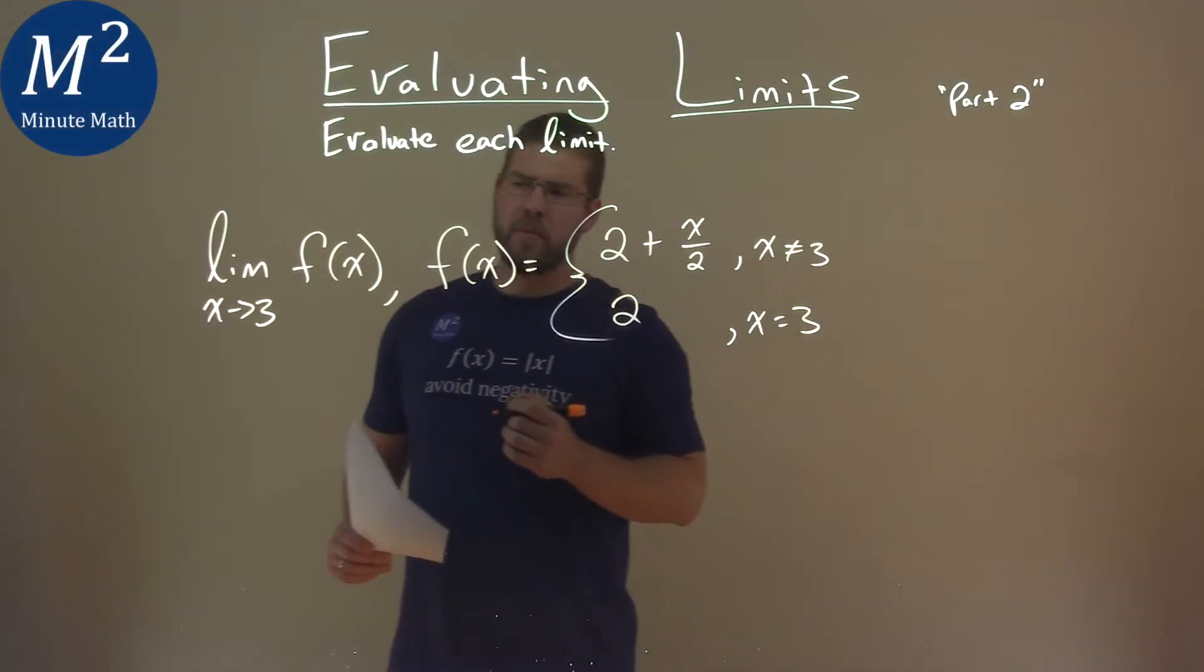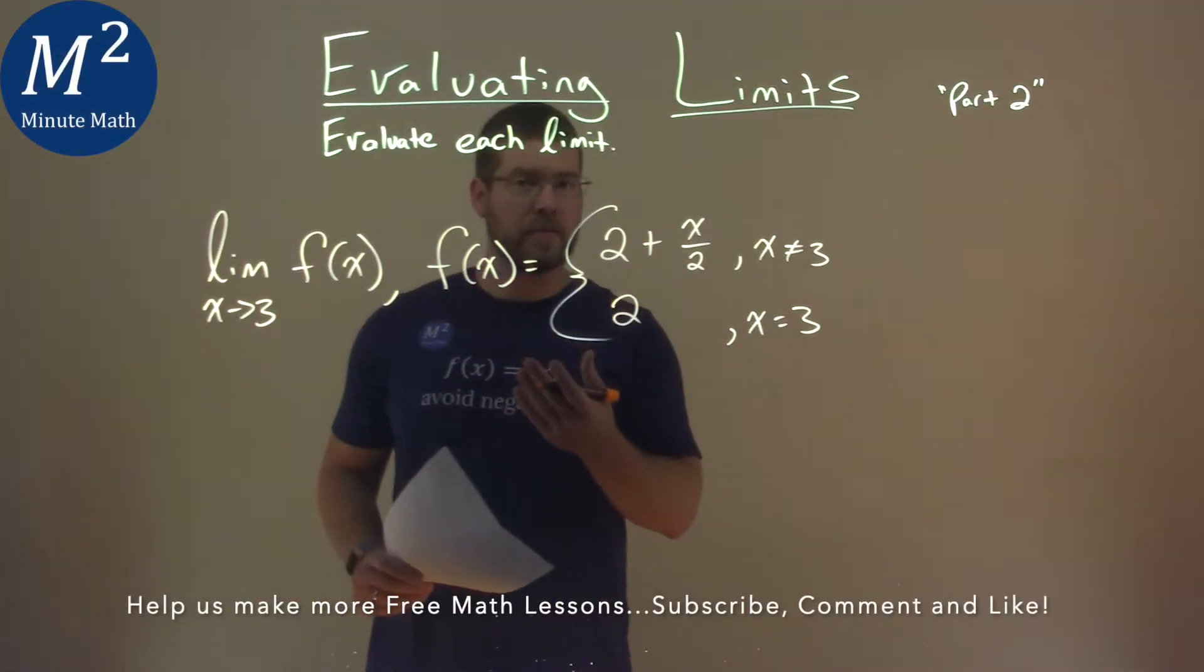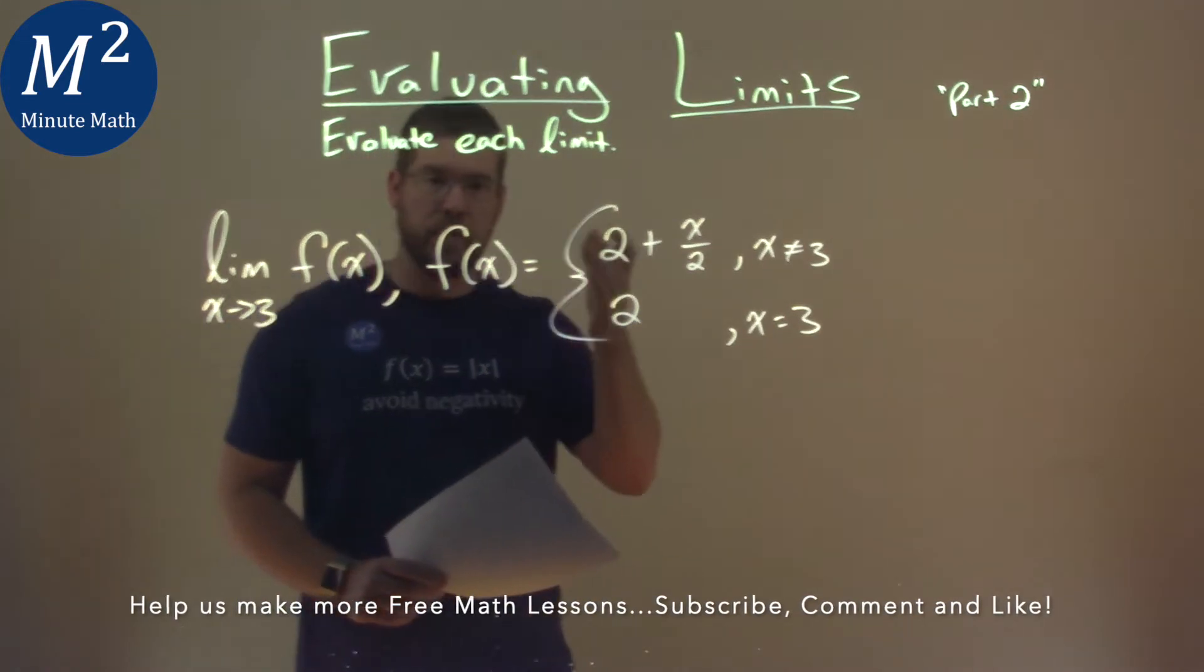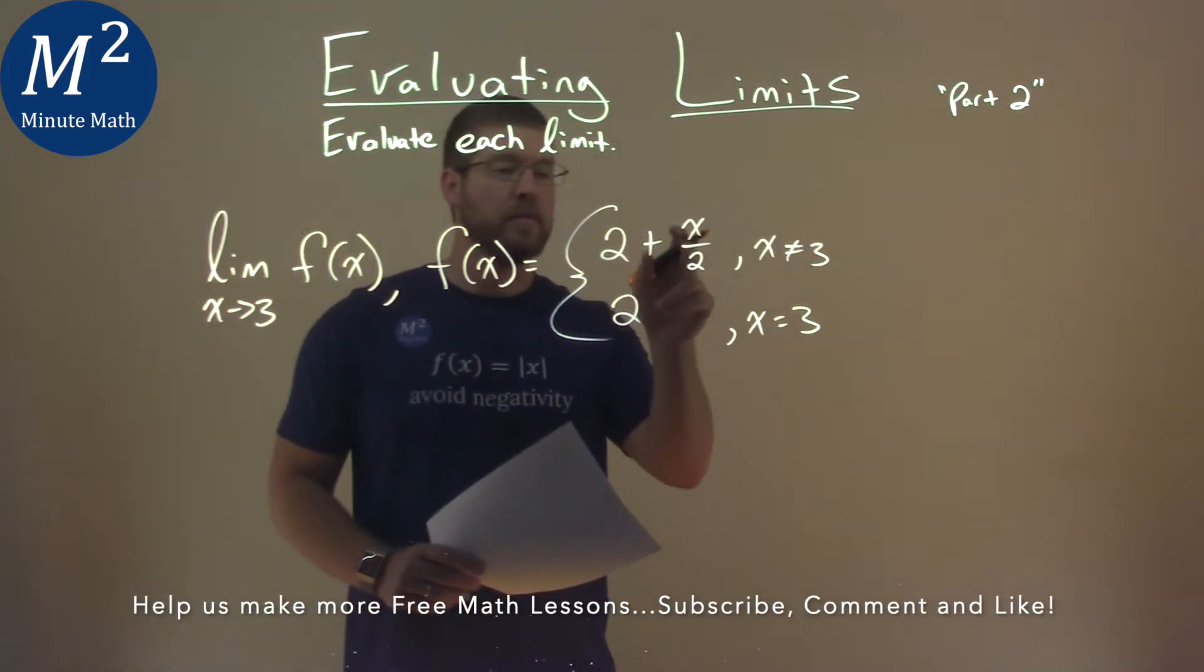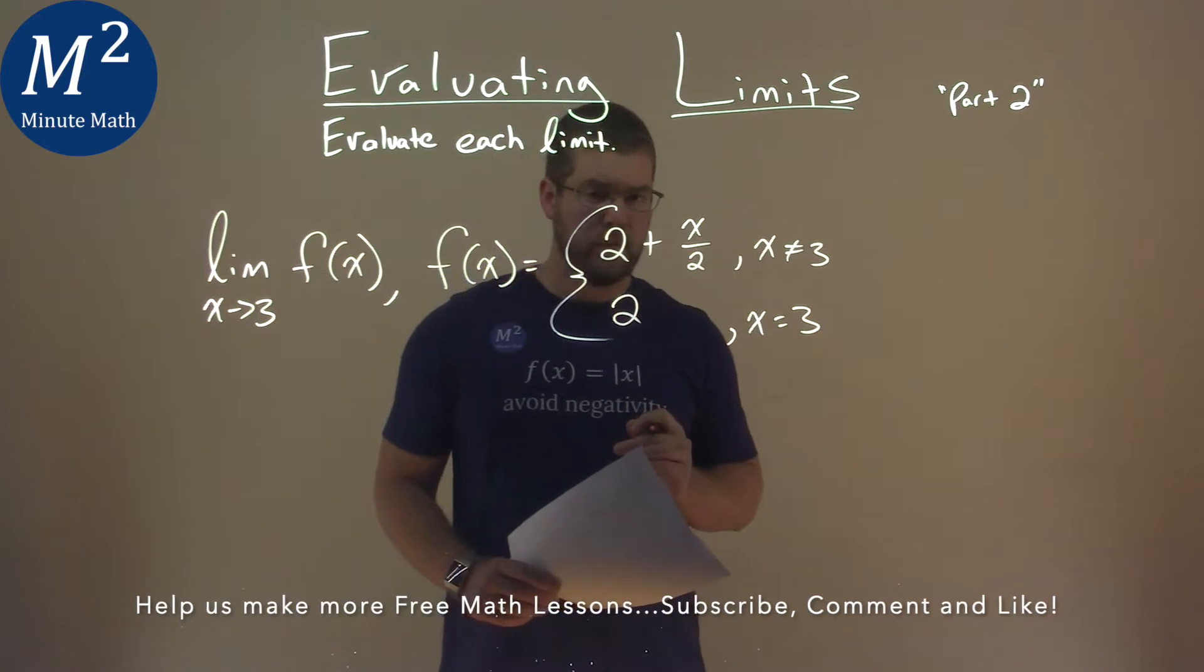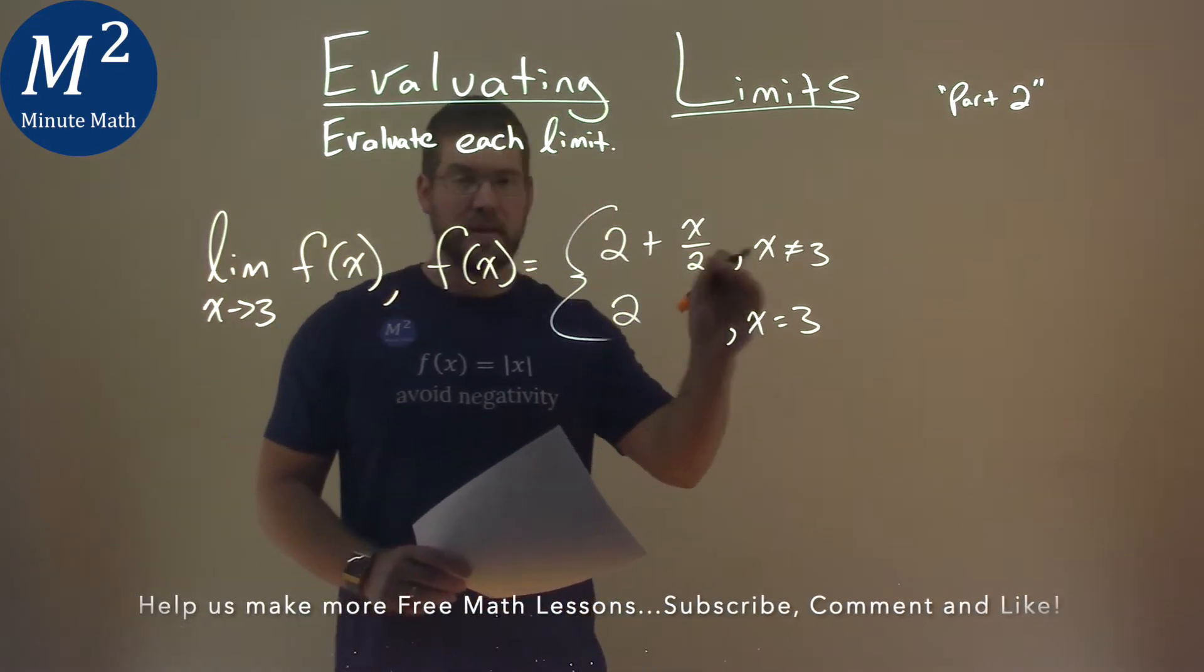We're given this problem right here, the limit as x approaches 3 of f of x, where f of x is equal to the piecewise function 2 plus x over 2, where x is not equal to 3, and 2 when x is equal to 3.